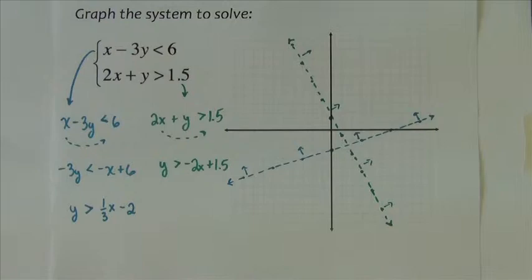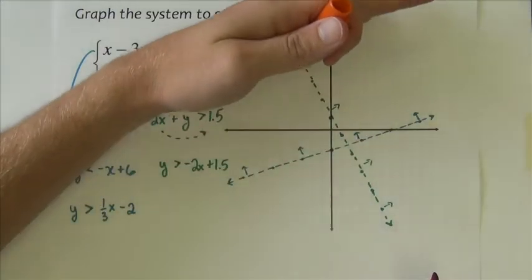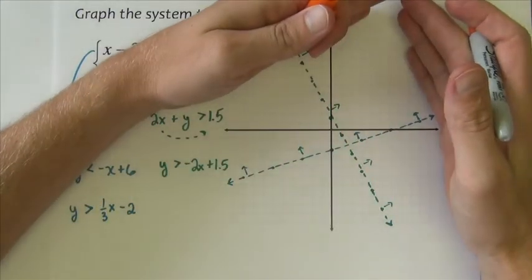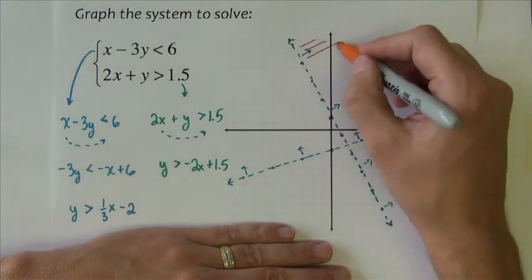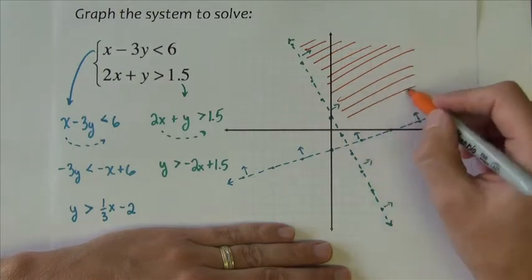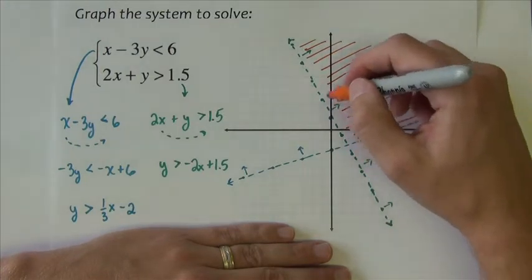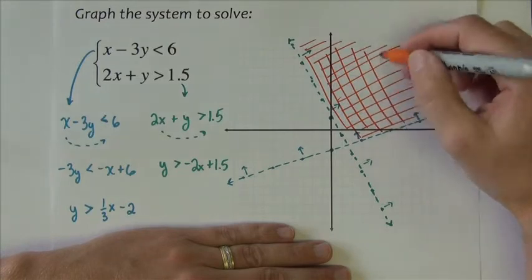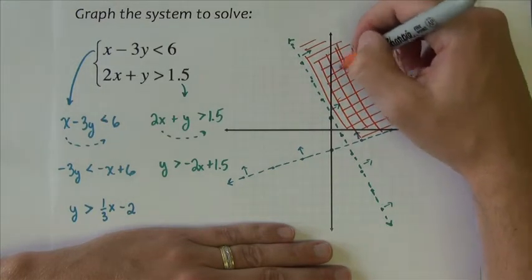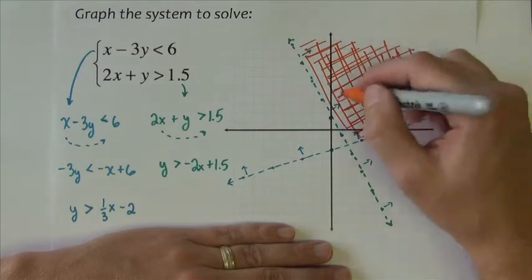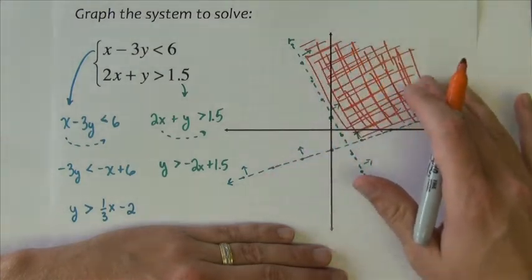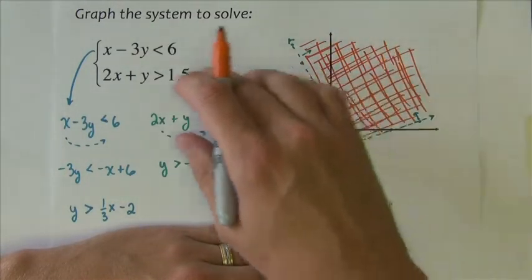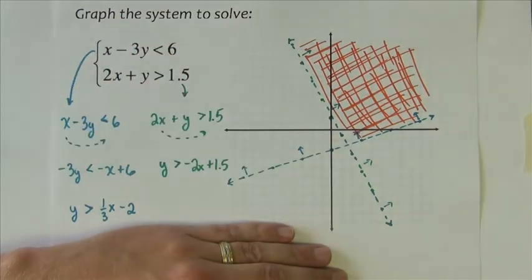Okay, so we've got our two lines. We've got greater than on each of them. So I want everything that is above and above. And we can see that the overlap then would be everything that is right out here. And that would be it. So every point that I find out in this region, when plugged in for x and y in the system, solves both inequalities.